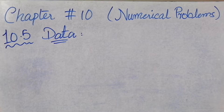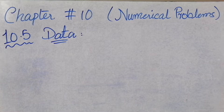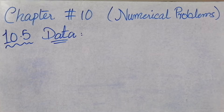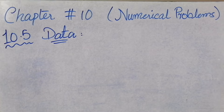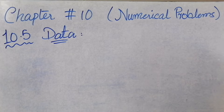Assalamu alaikum everyone, welcome back to my YouTube channel. I'm back with a new video. In this video I will solve problem 10.5 of chapter number 10. In 10.5 it is given: if 100 waves pass through a point of medium in 20 seconds, what is the frequency and time period of the wave? If its wavelength is 6 cm, calculate the wave speed.